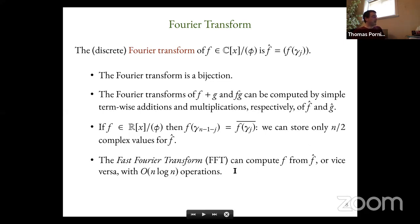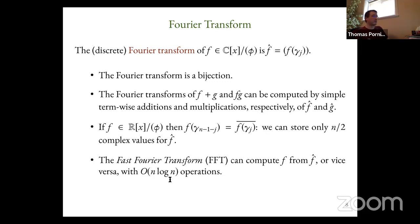The Fast Fourier Transform is the way to go to the discrete Fourier transform representation and back in N log N operations — it's well known. In implementation we always use bit-reversal indexing because it minimizes data movement.